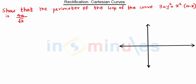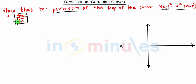Hello everyone, welcome to 'In 5 Minutes'. In this video we are going to see the next problem on rectification. The question is: show that the perimeter of the loop of the curve 3ay² = x²(a − x) is 4a/√3. We have to find the perimeter of the loop of this curve.